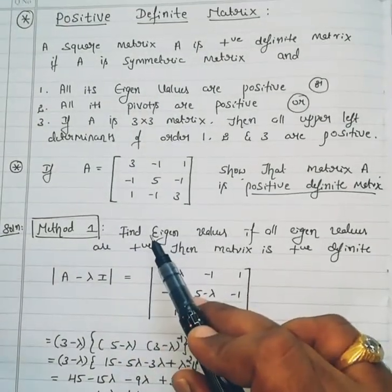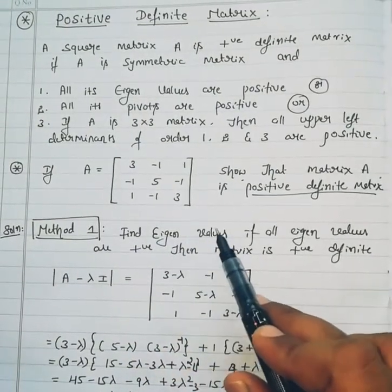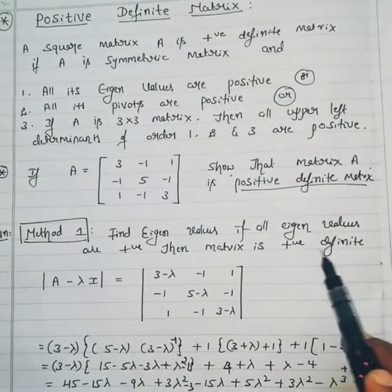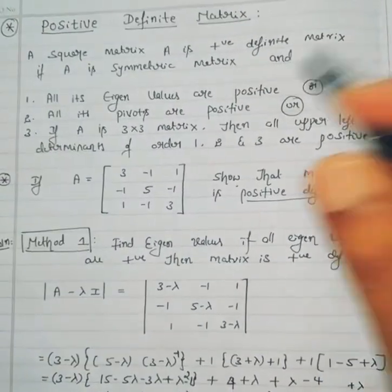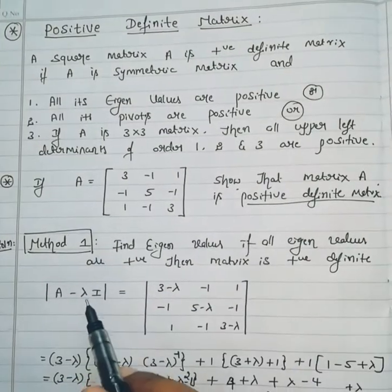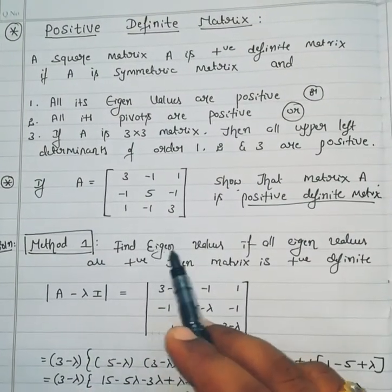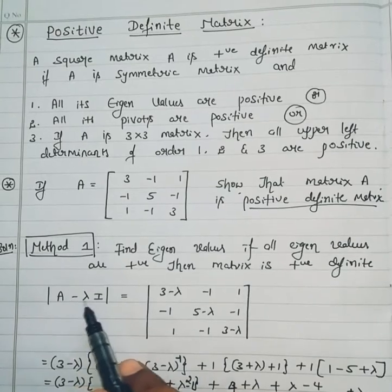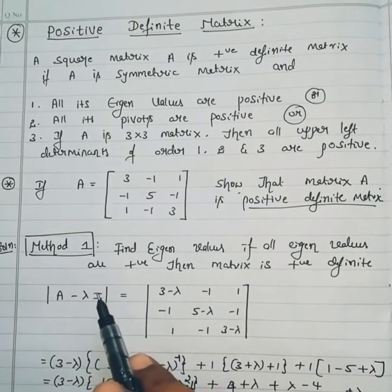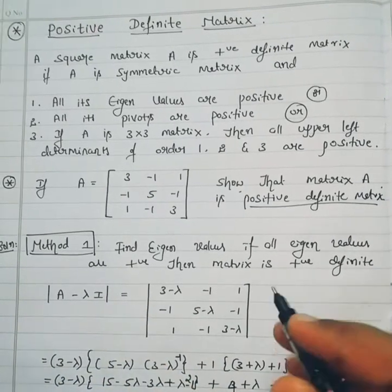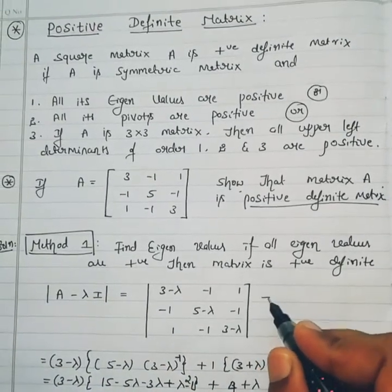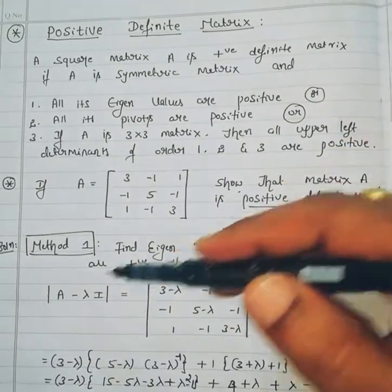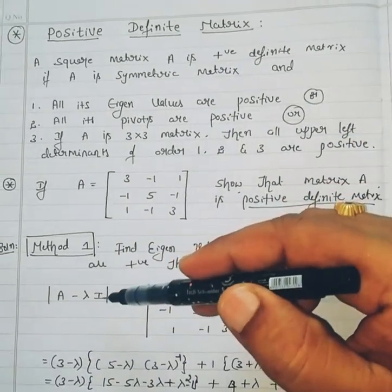Method one: find the eigenvalues. If all eigenvalues are positive then the matrix is positive definite. To find the eigenvalues we use the characteristic equation — the determinant of A minus lambda I equals zero. So here what is A minus lambda I? In the previous problems we have worked this out.